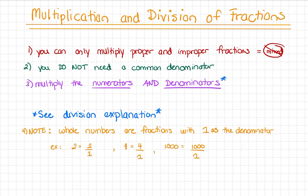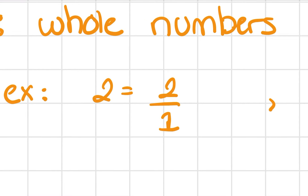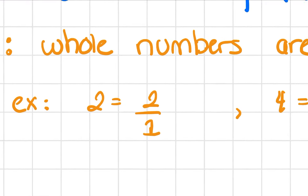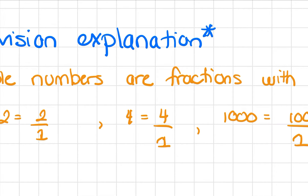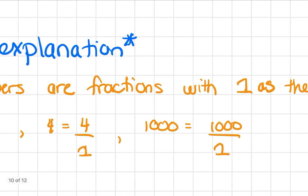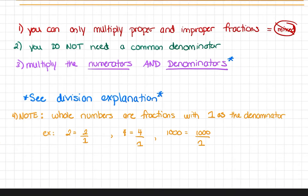The last thing I wanted to remind you is that every number in the world is a fraction. We just don't often write it as a fraction to save time and make it look cleaner. But every number has a one in the denominator if you don't see it. For example, the number two is equivalent to two over one, because two divided by one is just two. So four is four over one, and even one thousand is the same as a thousand over one. Very important as we move forward.